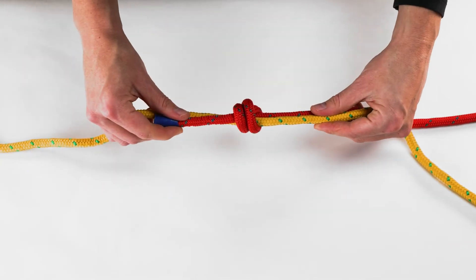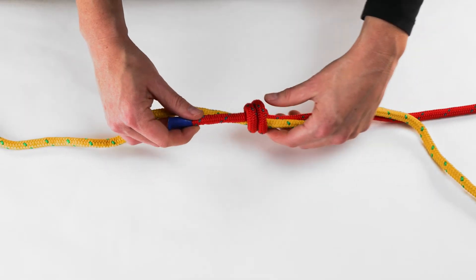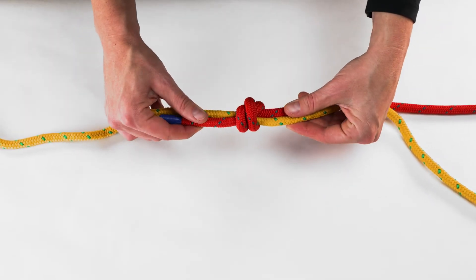When correctly tied and dressed, the knot should form a neat cross shape on one side.